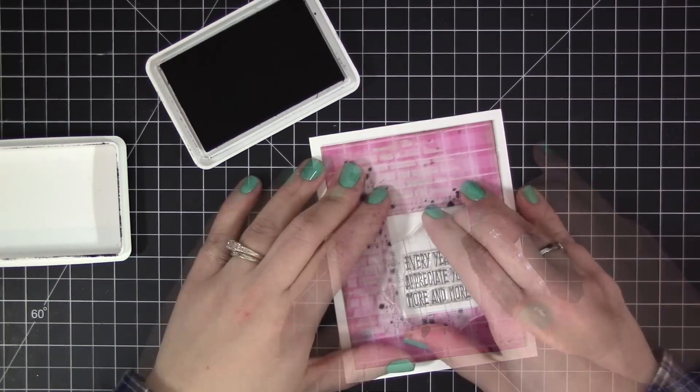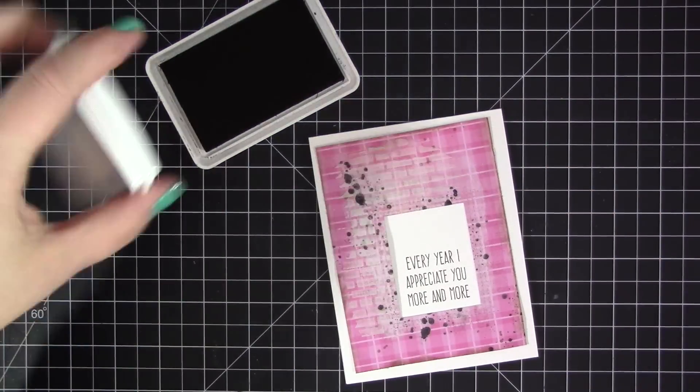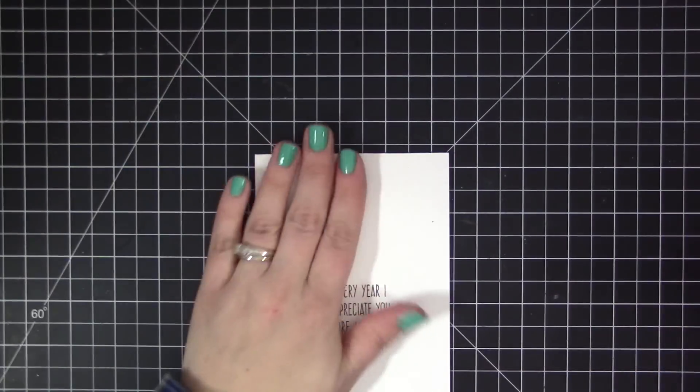Then I'm going to stamp my sentiment. To do that, I just positioned the pattern paper piece onto my card base and just kind of held it in place while I stamped my sentiment.